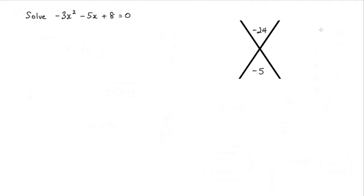I could go through and list all the factors of 24, but I can see straight away that it's going to be an 8 and a 3. Negative 8 times 3 gives me negative 24, and when I add these I do get negative 5. So clearly one of the factors is negative 8 and one of them is 3.